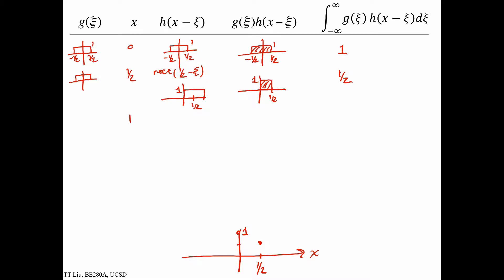Now let's look at x equals one. The g of xi is still the same rect function, and now we want rect of one minus xi, which is a rect function centered around one, going from one-half to three-halves. When we multiply those two functions together, there's no overlap, so the area is zero. At x equals one, the convolution value is zero. For intermediate values of x, the overlap decreases as x increases.